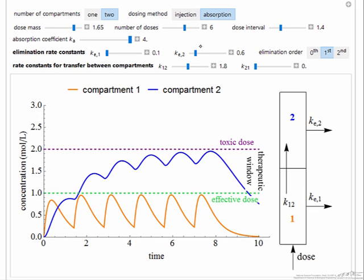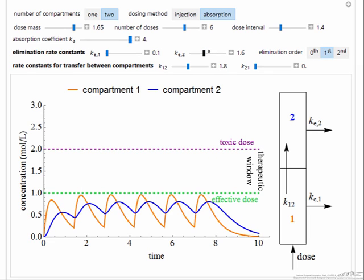As for example, we increase the elimination rate constant in the second compartment, we can dramatically decrease the concentration of the drug in that compartment.